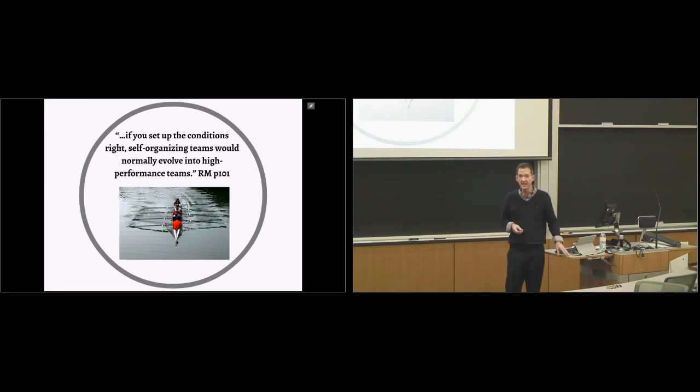And what are they empowering? What are they enabling? The secret sauce: enabling self-organizing teams. And not only self-organizing teams, but cultivating high-performing self-organizing teams. Steve Denning, and much of this is based on his book, Radical Management, he says, if you set up the conditions right, self-organizing teams will normally evolve into high-performing teams.